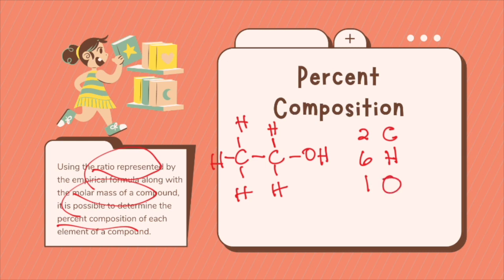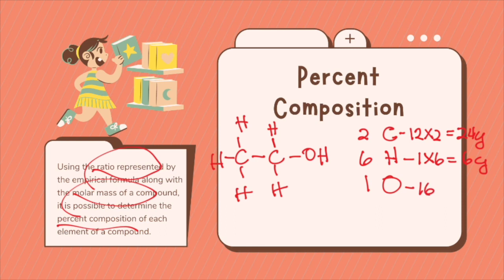When we calculate percent composition, we use the molar mass of the compound. Since you have 2 carbons, that will be 12 times 2, which is 24 grams. For 6 moles of hydrogen, that's 1 times 6, giving 6 grams. And oxygen is 1, so 16 times 1 gives 16 grams.